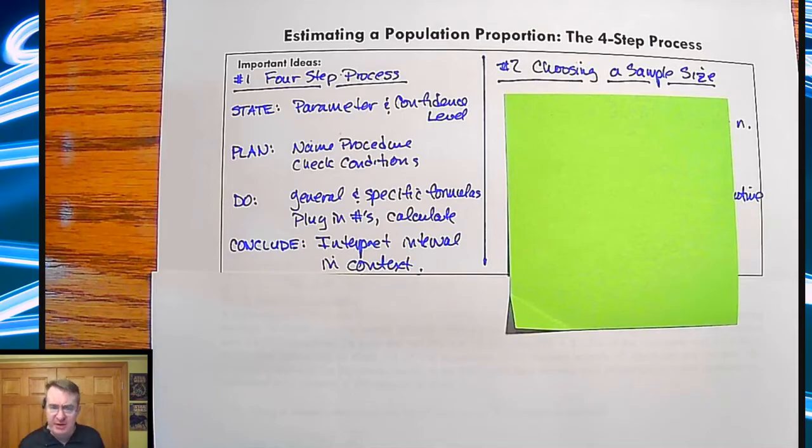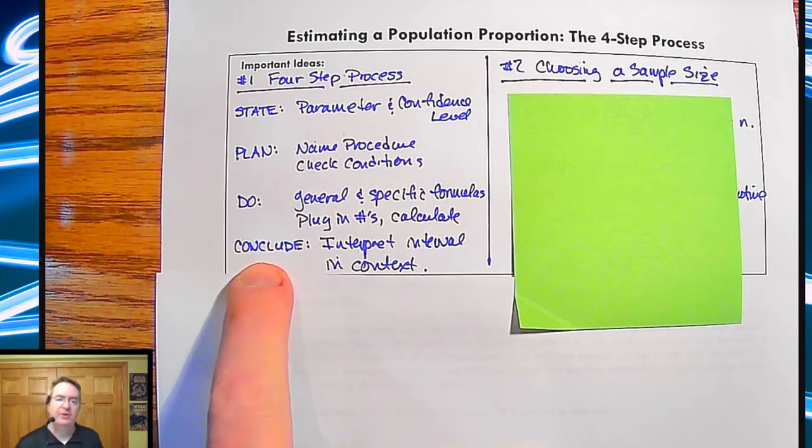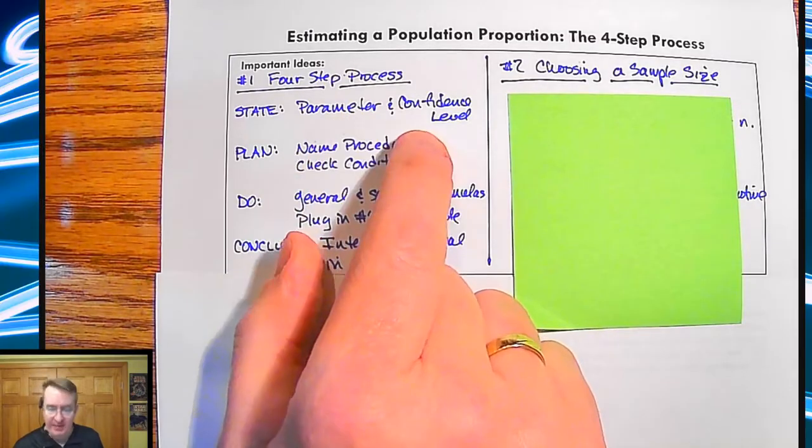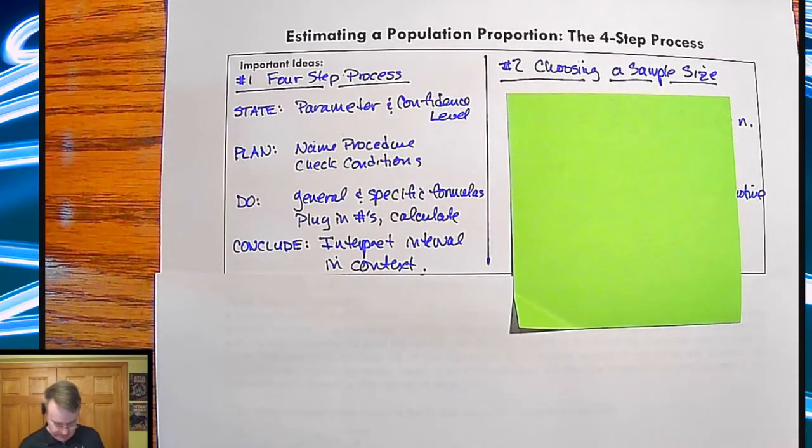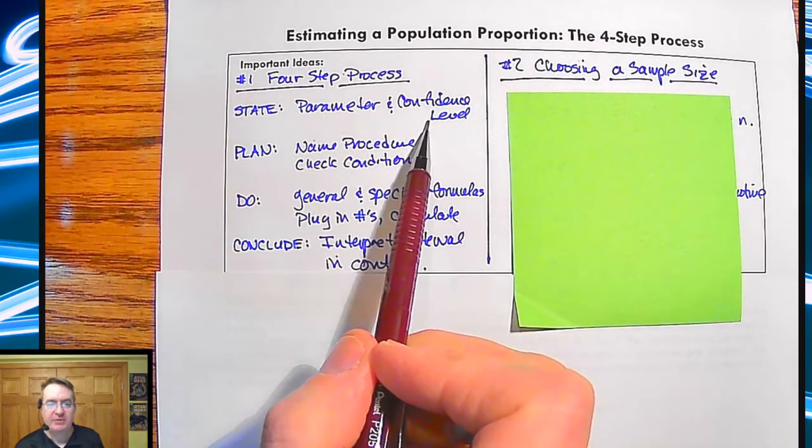So here is estimating the population in the four-step process. We talked about in the previous: state, plan, do, conclude. So when you state things, you're going to state the parameter and the confidence level of what's going on.